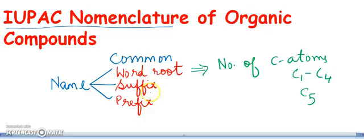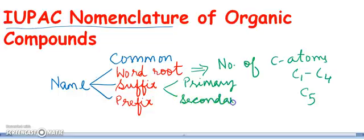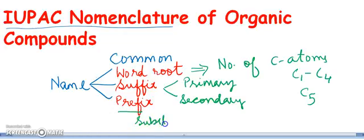In the IUPAC name, the suffix is linked to the word root, and the suffix contains primary and secondary parts. The third part of naming an organic compound according to the IUPAC system is the prefix. The prefix indicates the substitution of other groups in place of hydrogen atoms in the compound. These can be regarded as substituents or side chains.